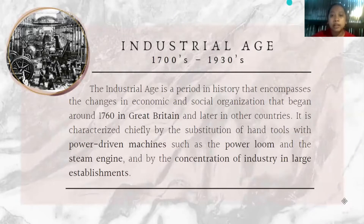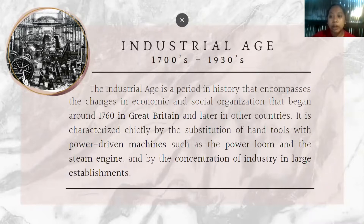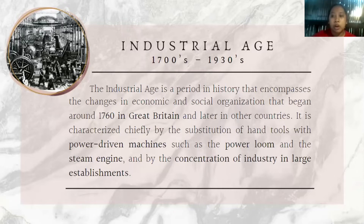So, what is in this era? This era encompasses the changes in economic and social organization that began in 1760 in Great Britain and later in other countries in the world. In this era, the handles are replaced by power-driving machinery such as the steam engine, power loom, and by the concentration of industry in large establishments. In addition, it is commonly believed that the Industrial Age was supplanted by the Information Age in the late 20th century, which is the view that became more common since the Revolution of 1989.